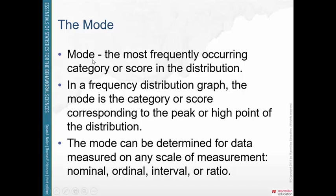The mode is simply the most frequent score. If you have a frequency distribution graph like a histogram or a frequency polygon, the mode is simply the highest point — the peak on that distribution — because that is the most frequently occurring score. The mode doesn't give you very much information; it just tells you what's the most frequent score.